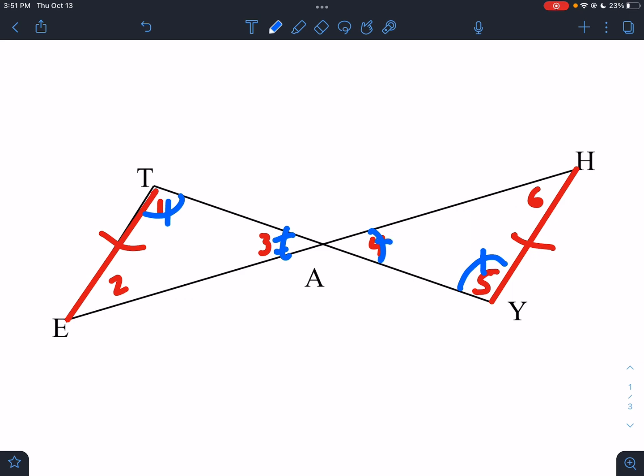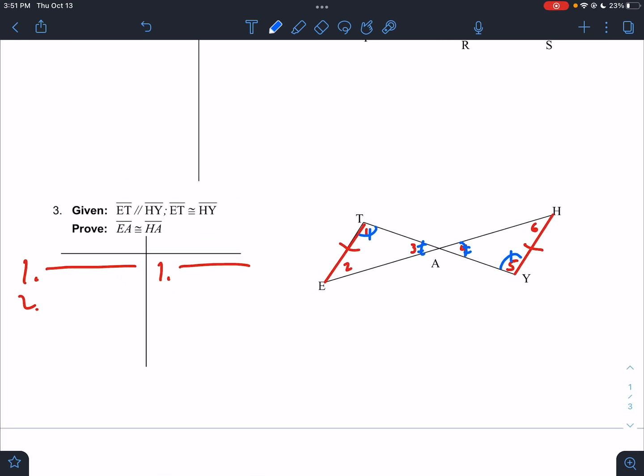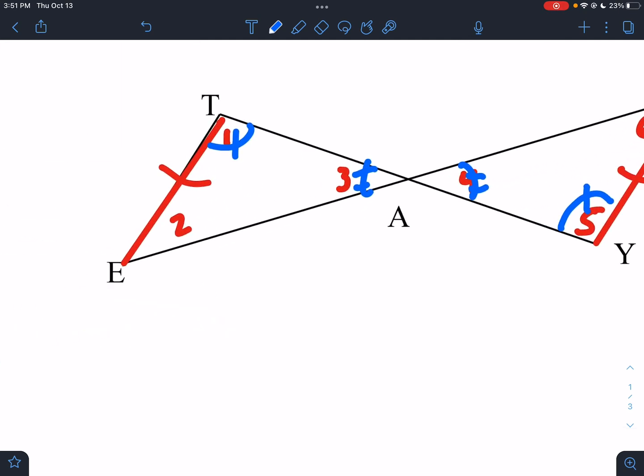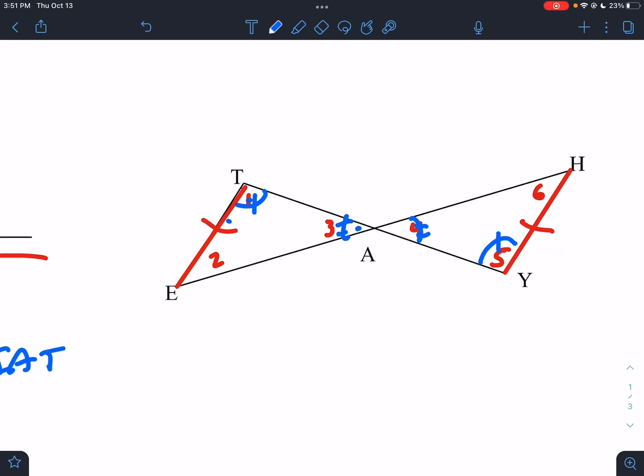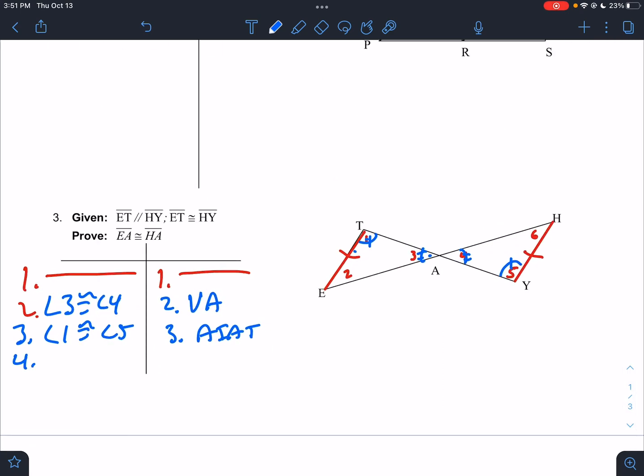So your answer should be based on your proof. I'm going to use the vertical angle. So I'm going to say angle three is congruent to angle four. That is the definition of vertical angles. I'm going to say angle one is congruent to angle five. And that is because of the alternate interior angle theorem.